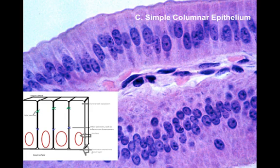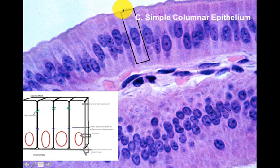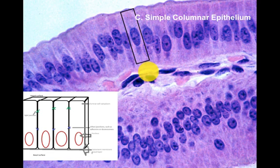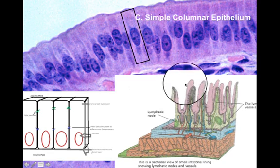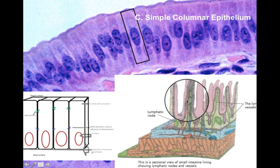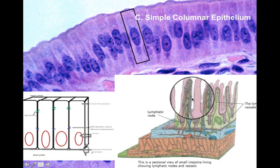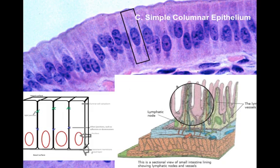Next is simple columnar epithelium — these are columnar-shaped, elongated cells. The nucleus is the dark purple spot in the middle, and the apical surface is open to the outside, as all epithelium has an apical surface with no tissue on top. Underneath is a different tissue — connective tissue. Simple columnar epithelium lines the intestines, where long finger-like projections are lined with this single layer, which is ideal for the absorption of nutrients from the intestine into the bloodstream.